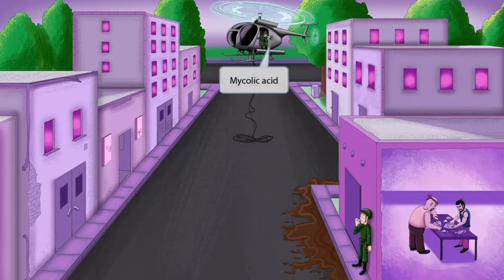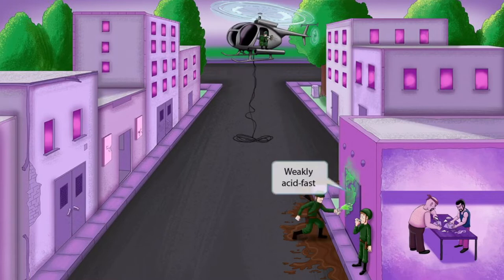The frightened soldier also has a comrade in the helicopter who's using a loud microphone to tell the terrorists to come out. Microphone sounds kind of like mycolic, so it will be used to represent that nocardia has mycolic acid in its cell wall.